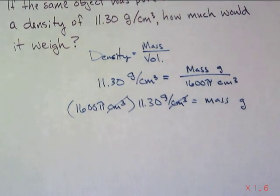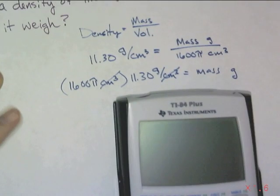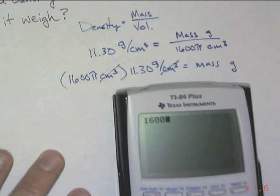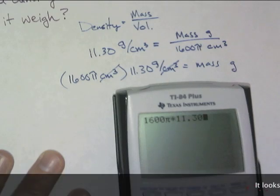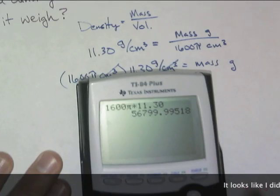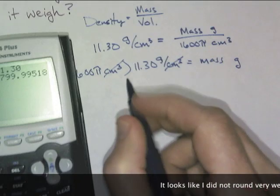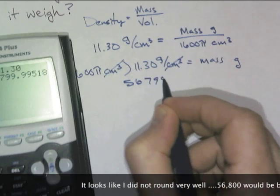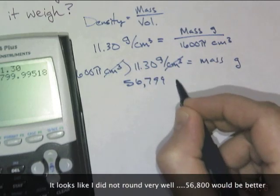Now, this just becomes, can we type it in correctly? So we get 1,600π times 11.30. So I am definitely going to have to round, because that's a rounded number also. So 56,799 grams.